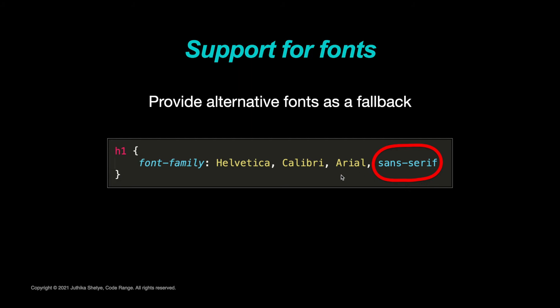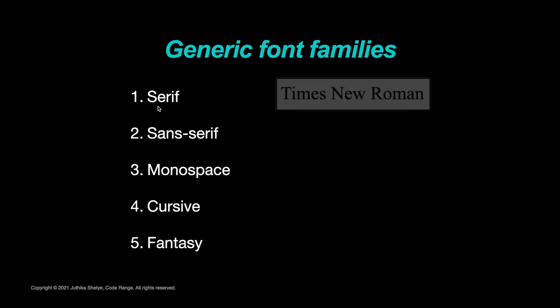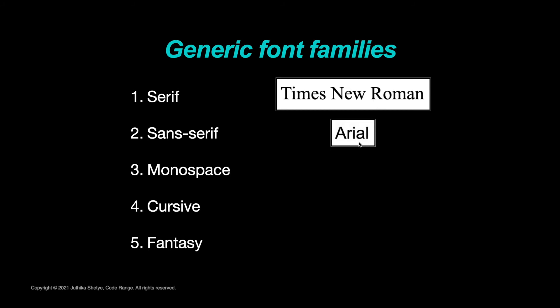Now, you might be wondering what this last word 'sans-serif' after the font values is. Well, it's the name of a generic font family. That means, if the browser is unable to load any of these optional fonts mentioned by us, it will pick a similar font from the generic family mentioned by us. In CSS, there are five generic font families: Serif, Sans-serif, Monospace, Cursive, and Fantasy. Serif fonts have a small stroke at the edges of each letter — they create a sense of formality and elegance. Sans-serif fonts have clean lines with no small strokes attached — they create a modern and minimalistic look.